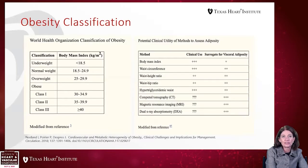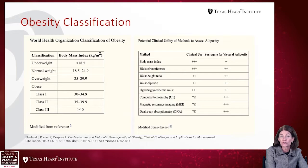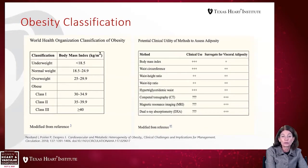Obesity is classified by the World Health Organization by increments of 5 kilograms per meter squared, where normal weight is defined as 18.5 to 24.9, from 25 to 30 is considered overweight, and then obesity is classed as any BMI over 30 and substratified as class 1 or mildly obese less than 35.